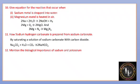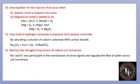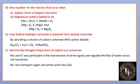Mention the biological importance of sodium and potassium. Na+ and K+ ions participate in the transmission of nerve signals and regulate the flow of water across the cell membrane. Sodium ions transport sugars and amino acids into cells. Potassium ions participate in the oxidation of glucose to produce ATP.